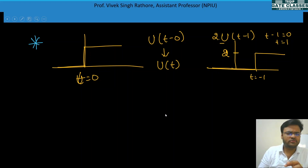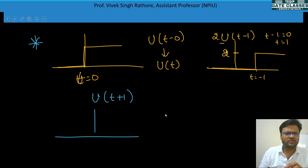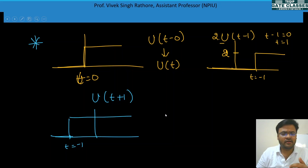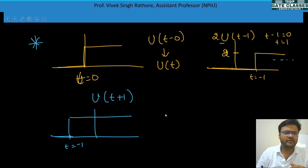For u(t + 1), the step change occurs at t = −1 and continues to infinity. This is an infinite duration signal because it goes on indefinitely.